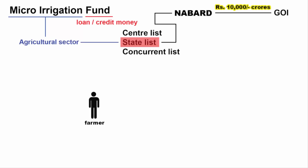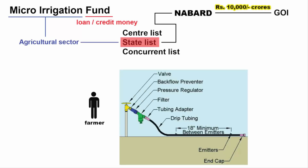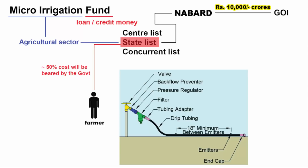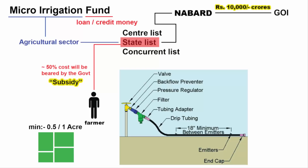To install a micro-irrigation system, a farmer would need pipes, sprinklers, water filters, water pressure regulators, a pump, and a number of valves and gauges. All these components require money. Approximately 50% of the cost of these components will be borne by the government — you can think of it as a subsidy, though the exact percentage may vary. As a farmer, you also need to have a certain minimum area of land — around half an acre or one acre — to qualify to avail this subsidy.